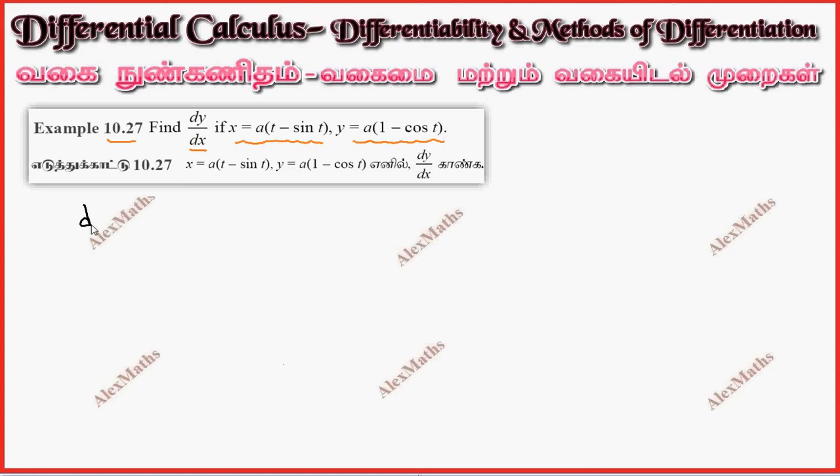Now, dx by dt: a is constant, t differentiates to 1, minus sin t differentiates to cos t. dy by dt: a is constant, 1 differentiates to 0, minus cos t differentiates to minus sin t, plus sin t, total a sin t.